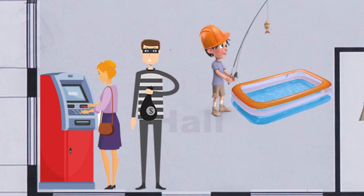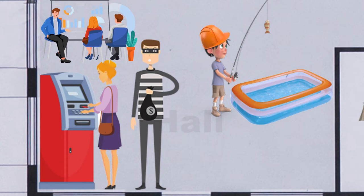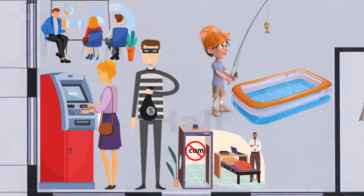On the left-hand side, have a look at the cash point. A woman is taking money out and the bad guy — wearing a black and white stripy t-shirt with a swag bag — is looking over her shoulder to find out her password and gain access to her account later on. To mitigate against this, there's a staff meeting going on: staff training is one way, and another is to ban access to certain websites.